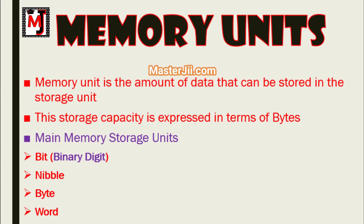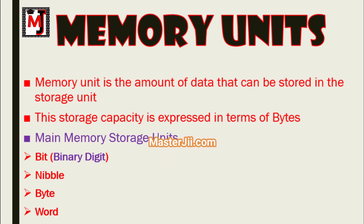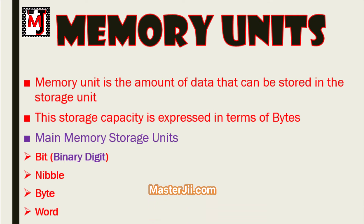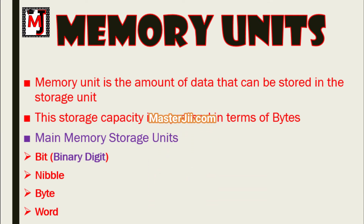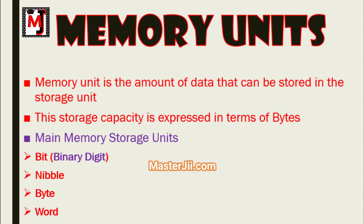And then word. A computer word, like a byte, is a group of a fixed number of bits processed as a unit, which varies from computer to computer but is fixed for each computer. The length of a computer word is called word size or word length. It may be as small as 8 bits or as long as 96 bits. A computer stores information in the form of computer words.